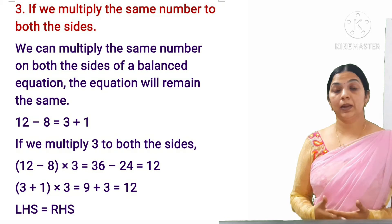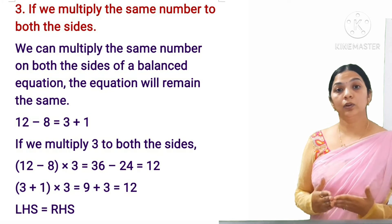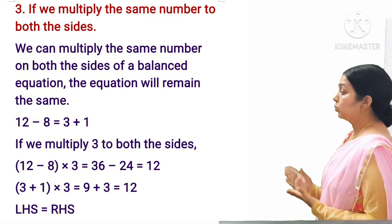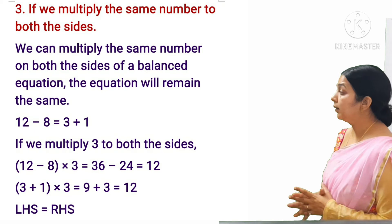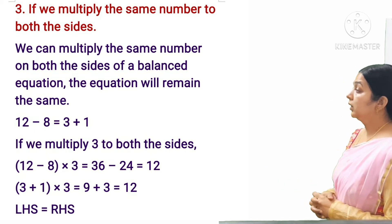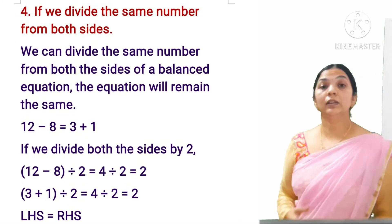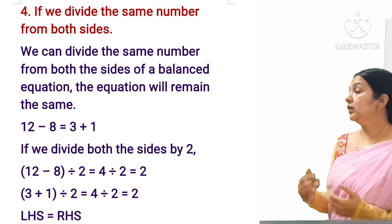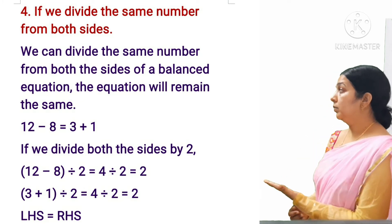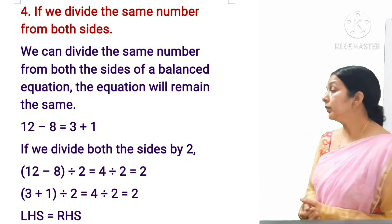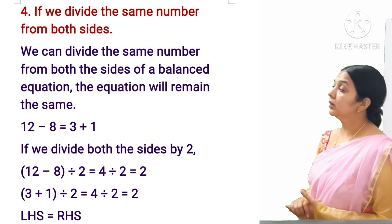If we multiply the same number on both sides, the equation remains the same. For example, 12 − 8 = 3 + 1; multiplying both sides by 3 keeps LHS equal to RHS. The same applies to division — if we divide a balanced equation by the same number on both sides, for example dividing by 2, the equation remains the same.